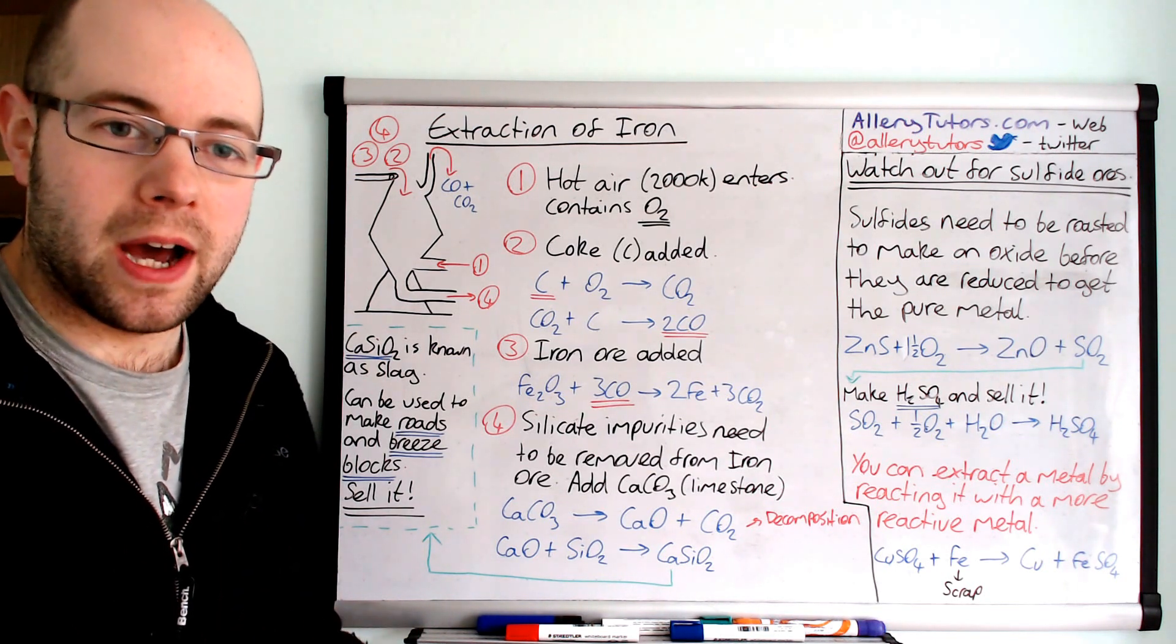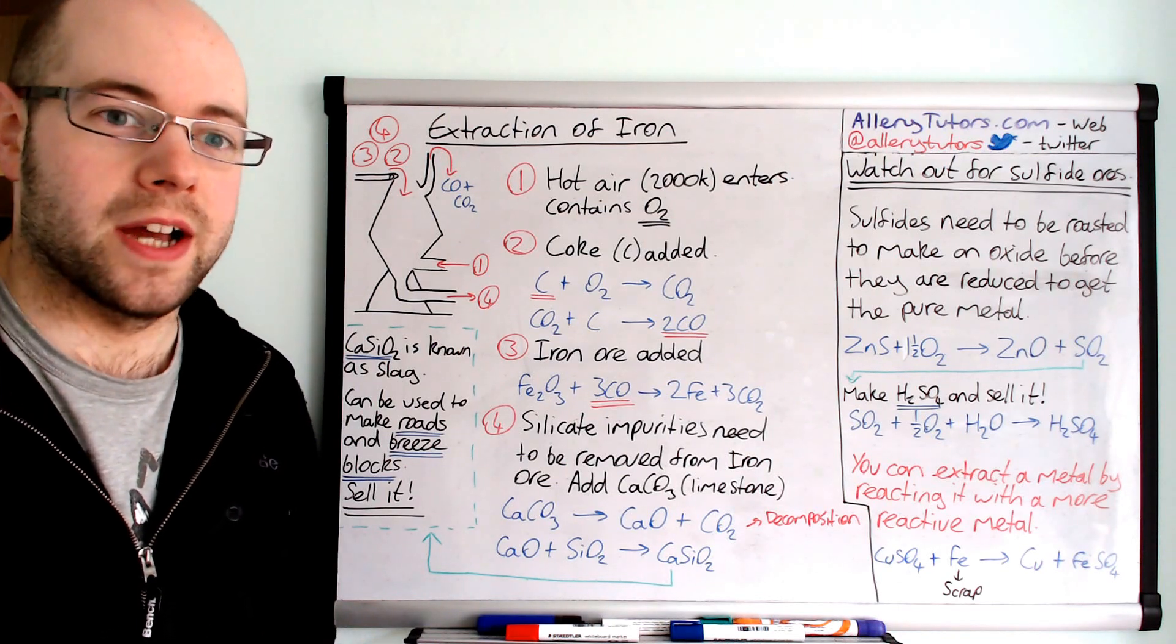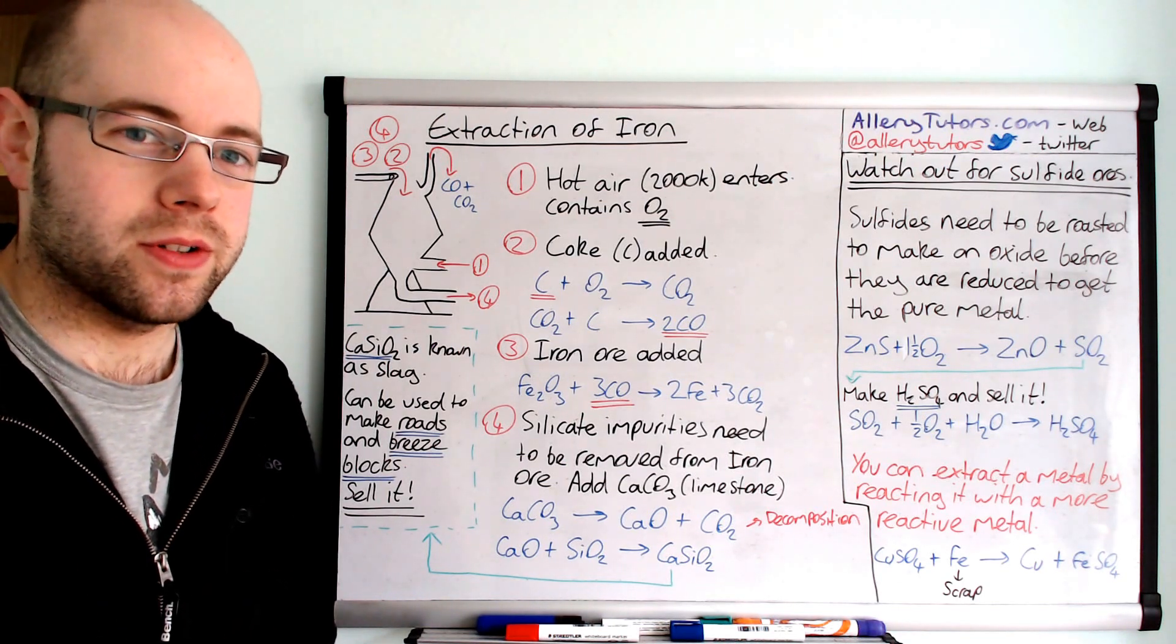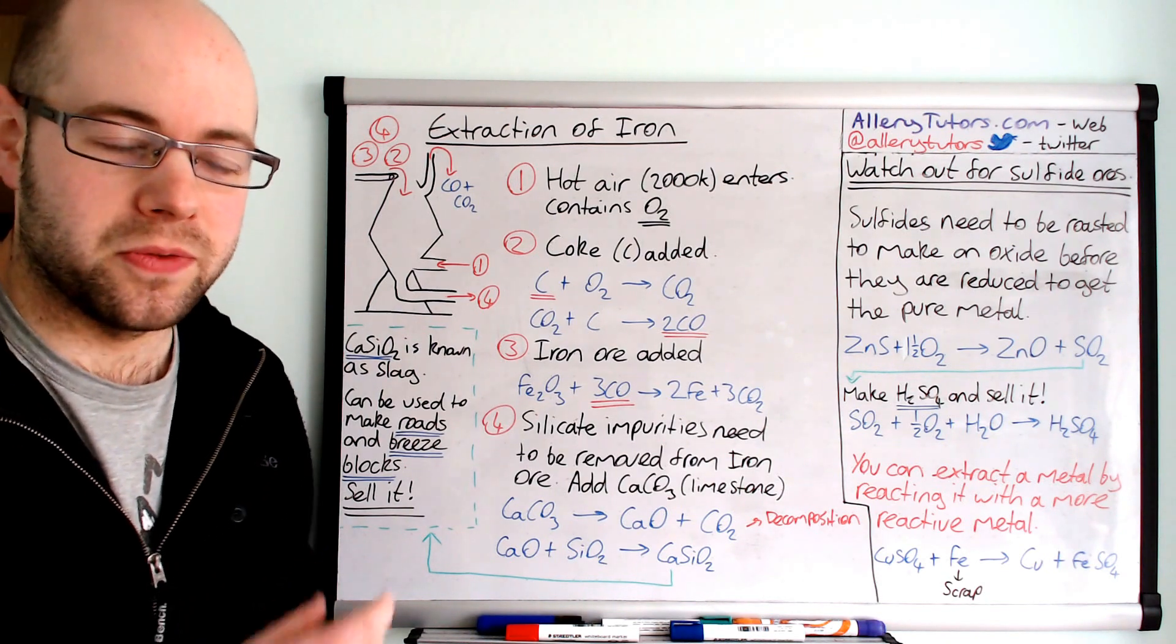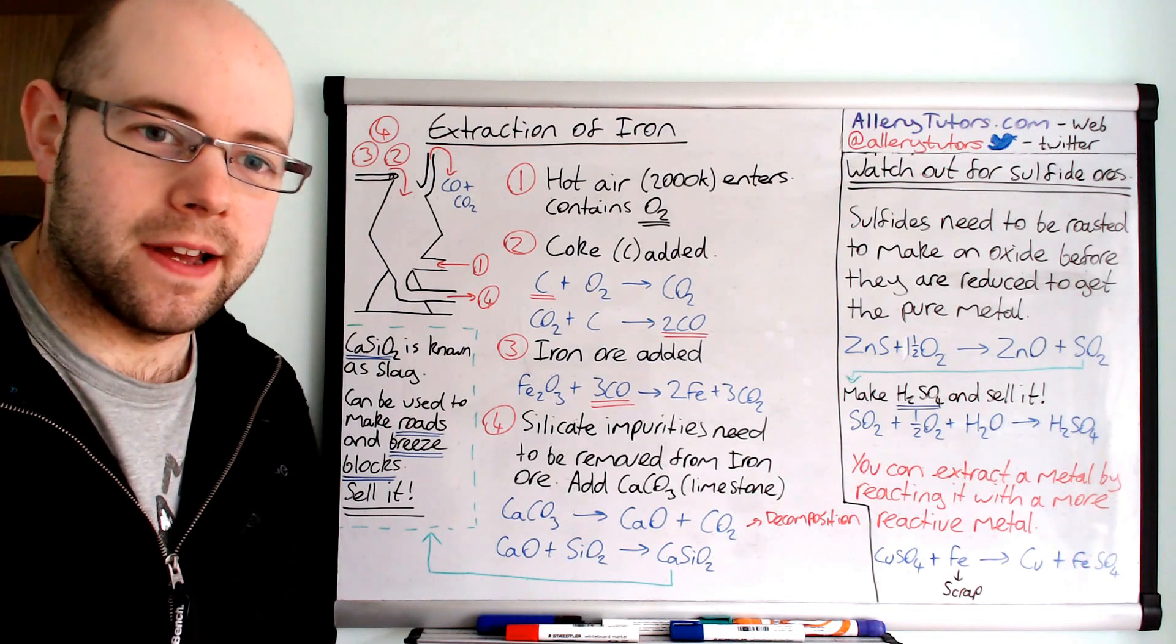So when we're talking about iron ore, well iron ore mainly exists as an oxide, so it's iron oxide. Some ores don't contain an oxide and they might contain a sulphide which I'll come on to in a minute. But we're mainly going to look at the iron for this purpose.